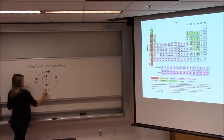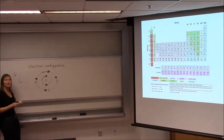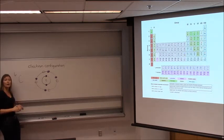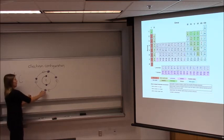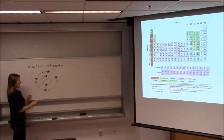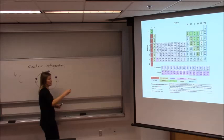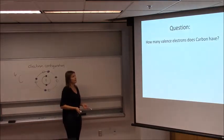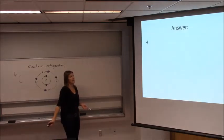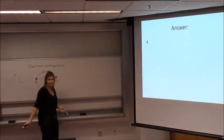So how many valence electrons does carbon have? That's asking how many are in the outer shell. Carbon has four valence electrons — it's in column four.